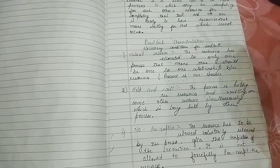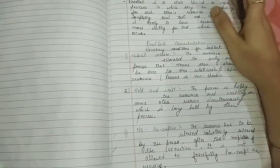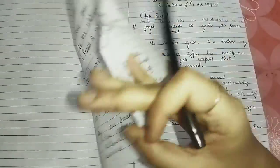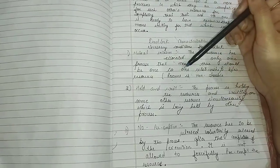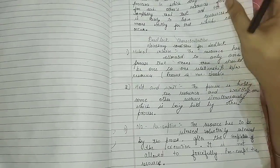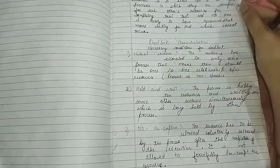Now let's look at the characteristics of deadlock. First of all, I will tell you how many characteristics are. There are four characteristics: mutual exclusion, hold and wait, no preemption, and circular wait.